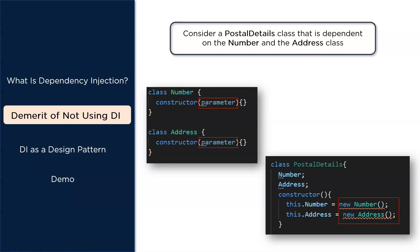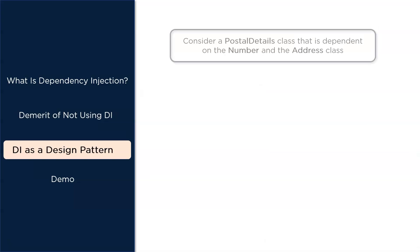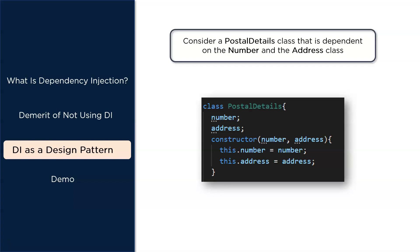Dependency injection is a coding pattern where a class receives its dependencies from an external source rather than creating them on its own. In the example above, we move the definition of dependencies from inside the constructor to the constructor's parameters. The PostalDetails class doesn't create the dependencies anymore — it just consumes them. With that, we overcome the drawbacks of not using DI.